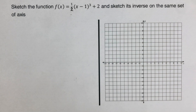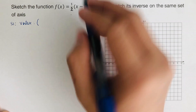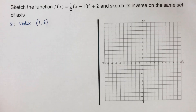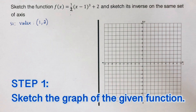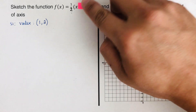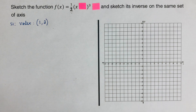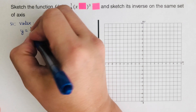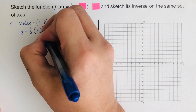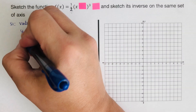Step 1 for the new problem: our vertex using 'switch and keep' is at (1, 2). To sketch the graph of the given function, we cover the h and k first to determine where the dots are. The equation becomes y = ½x³. We create a table of values from the vertex.